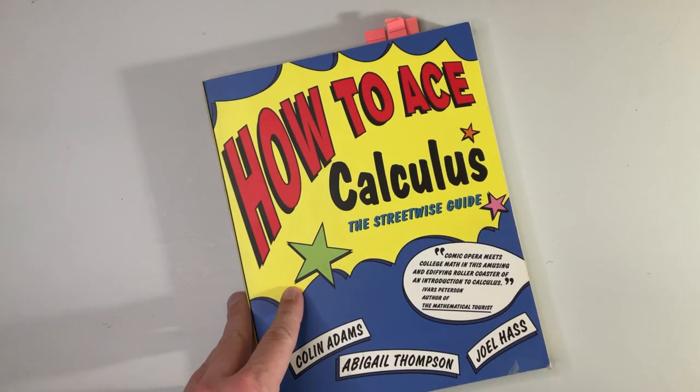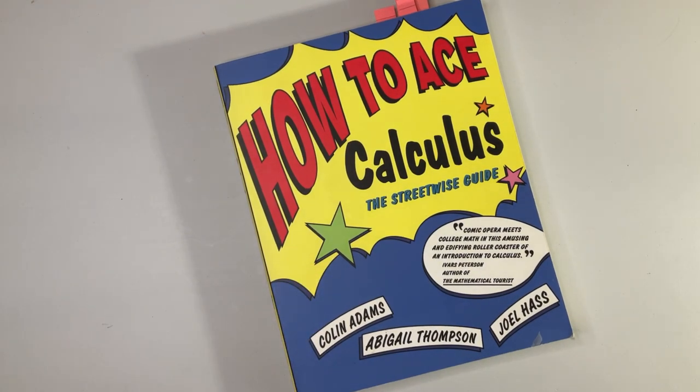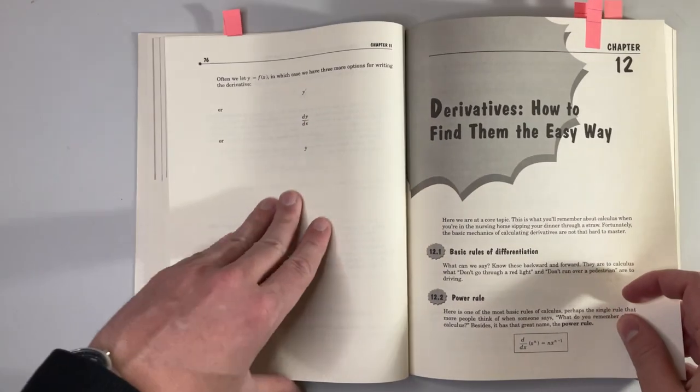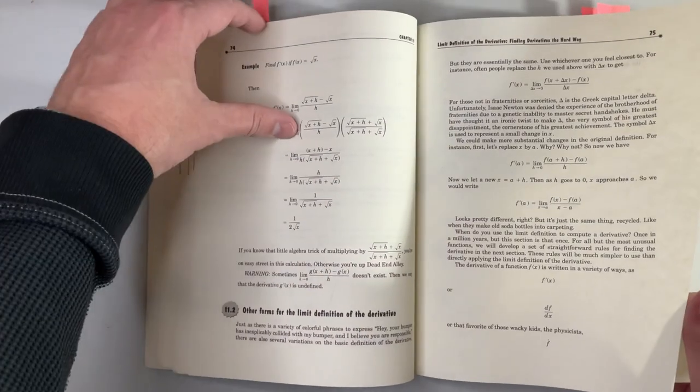My favorite calculus textbook is the Streetwise Guide. Don't mistake the cartoons for lack of rigor. This book covers the concepts that you need to know for Calculus 1, and it does it very well.